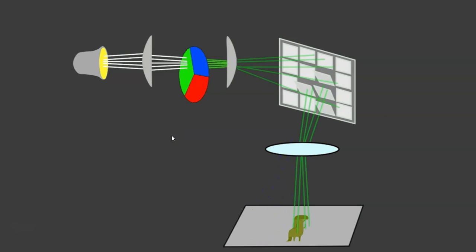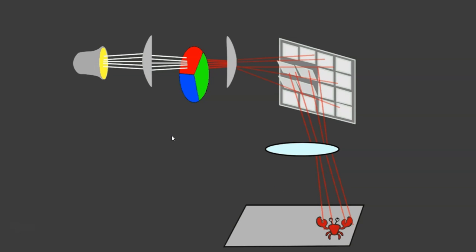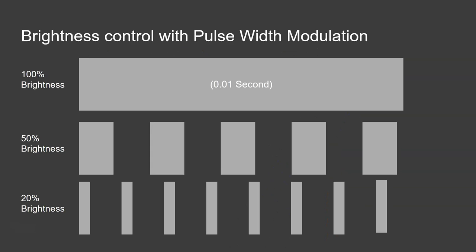Because we can't turn the mirrors on or off slightly, we can only turn them completely on or off. What we do is use pulse width modulation. So if you want it at 100% brightness, then you just leave that mirror open for the full duration that's needed.